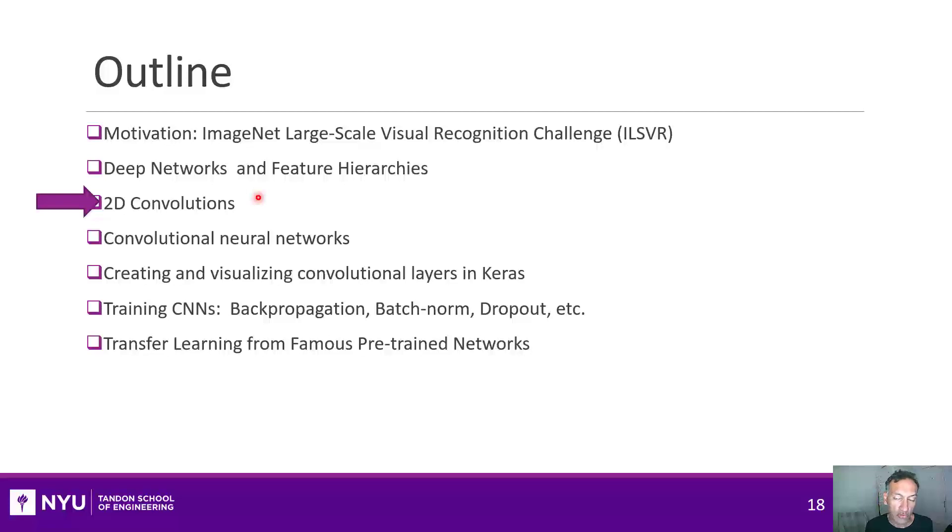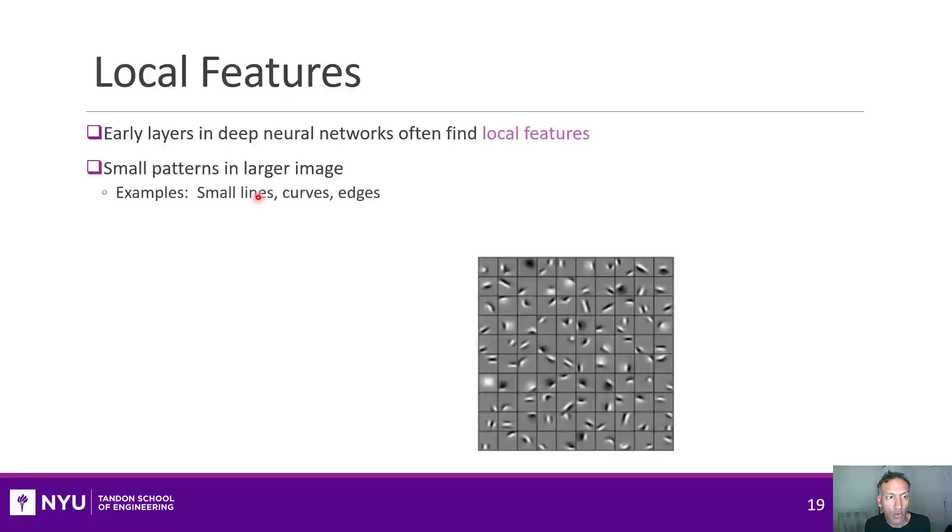Okay, let's start this section with looking at what are convolutions, which are the basic operations for convolutional neural networks. Convolutions are really about detecting local features. The early layers in deep neural networks find what are called local features, and those are typically patterns like small lines, curves, and edges. Here are some of the types of patterns that typically a first early layer in a neural network for image processing would use.